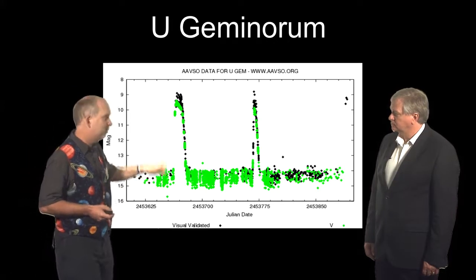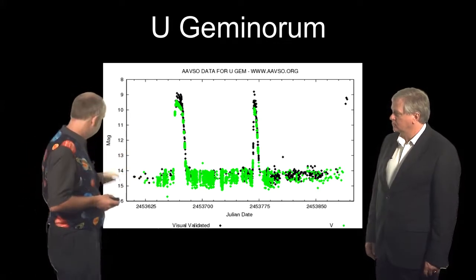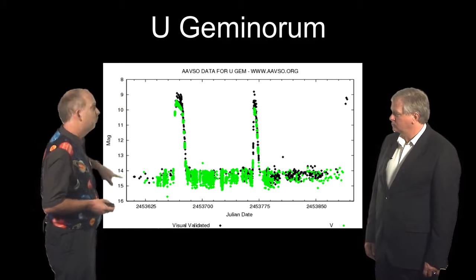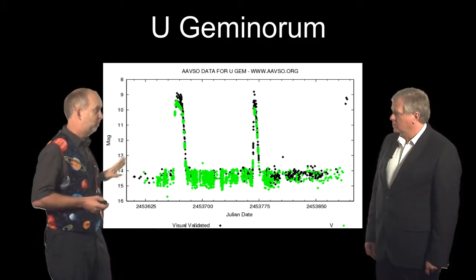You've got a rather faint star and every now and then it gets about a hundred times brighter. This is in magnitude scale, so it goes from 9th magnitude to 14th magnitude, that's five magnitudes, a factor of a hundred in brightness.